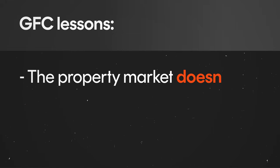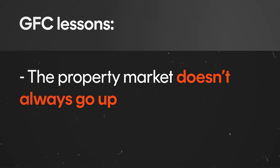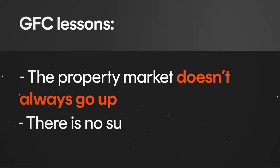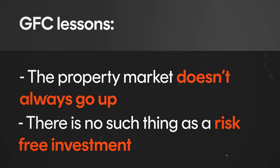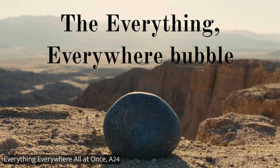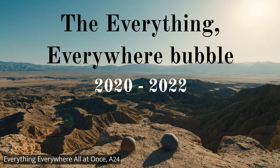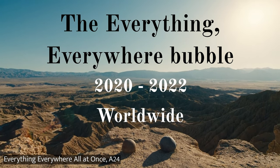The devastation of the GFC brings to mind an important lesson. Prior to the GFC, housing was considered a safe bet because the housing market always goes up. In reality, it's important to know that there is no such thing as risk-free return, and even safe investments carry risk. The GFC also involved the first widespread use of quantitative easing by central banks — a method of propping up the economy by creating new money used to fund government debt. This method of monetary policy was widely used in the Everything Everywhere bubble, 2020 to 2022, worldwide.